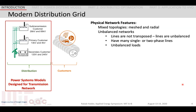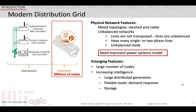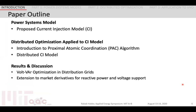Most power system models are designed for the transmission grid, which varies significantly from distribution grids. In the distribution grid, we have both meshed and radial topologies and are met with highly unbalanced networks because of the line characteristics and the presence of unbalanced loads. And so there is a need for improved power systems models. The high penetration of DERs requires the coordination of a large number of intelligent and spatially distributed agents. To tackle this coordination problem and retain tractability and information privacy, we must then look towards distributed paradigms. In the rest of this presentation, I will go over these two building blocks, which include the power systems model and distributed optimization, and then leverage both of these in order to address the Volt-VAR optimization problem. We also present results for the IEEE 34 node network.